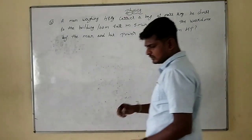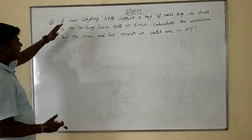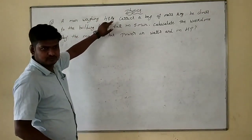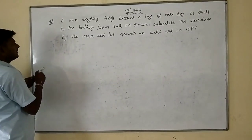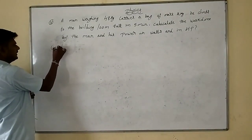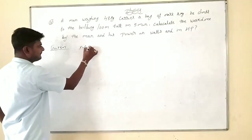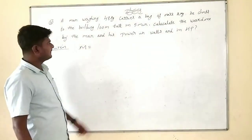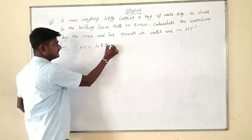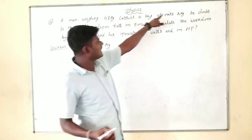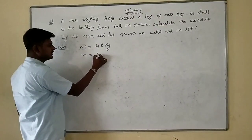Okay, we can move to the next problem. A man weighs 48 kg — that will be the mass of the man, capital M, given as 48 kg. He carries a bag of mass 2 kg, written as small m, 2 kg.